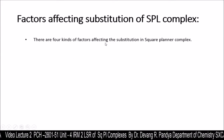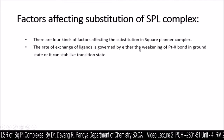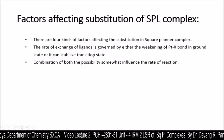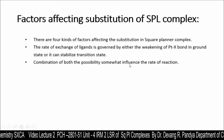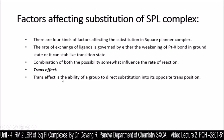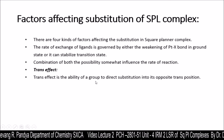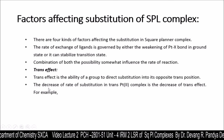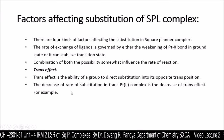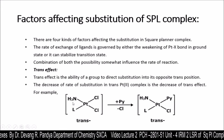There are four kinds of factors affecting substitution in square planar complexes. The rate of ligand exchange is governed by either weakening of a Pt–X bond in the ground state or stabilization of the transition state, or a combination of both. The first factor is the trans effect — the ability of a group to direct substitution into the opposite trans position. The decrease in the rate of substitution in trans Pt(II) complexes corresponds to a decrease in the trans effect.